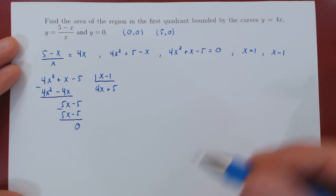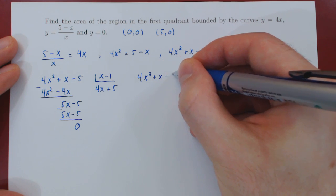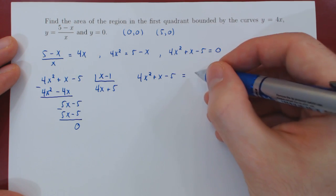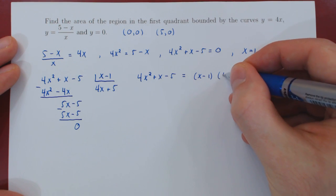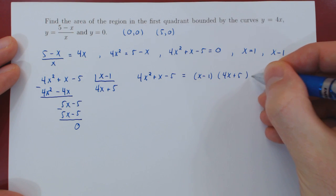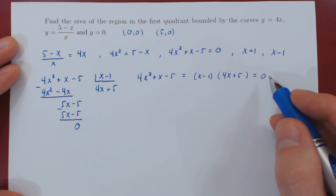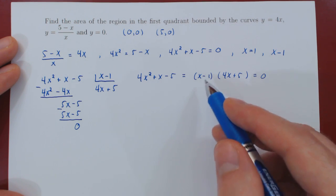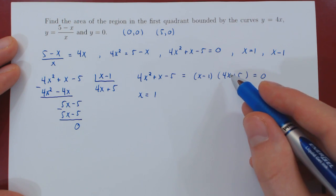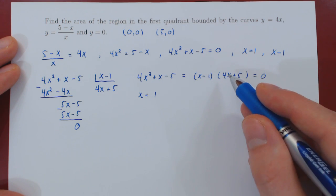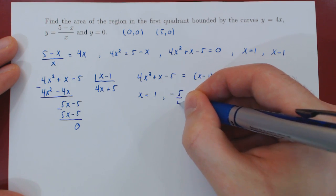The polynomial 4x squared plus x minus 5 factors as (x minus 1)(4x plus 5). We want to find the x values that will lead this to be equal to 0. The answers are x equals 1 and, if this is 0, then 4x is negative 5, so x is negative 5 quarters. We have our two values of x.